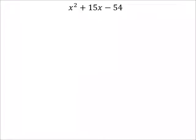Alright, let's do this one. So we have a b value which is 15 and a c value which is negative 54.